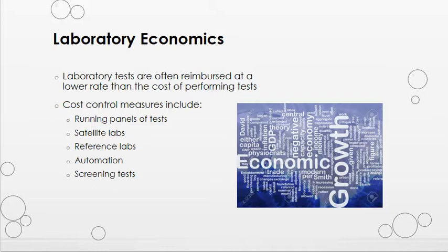Reference labs can also help hospital labs save money, especially on high cost, low volume tests. Rather than keeping expensive reagents in stock for a test performed once per month or less, hospital labs can send that testing to a reference lab. Automation in the lab has also contributed to cost savings by increasing test capacity and decreasing turnaround times. Screening tests can help lower costs by performing a lower cost test first and potentially eliminating the need for higher cost confirmation testing. A good example of this is flu testing — if a screening test is positive for flu A or B, the provider can treat the patient based on those results rather than waiting for a PCR, which is a higher cost test.